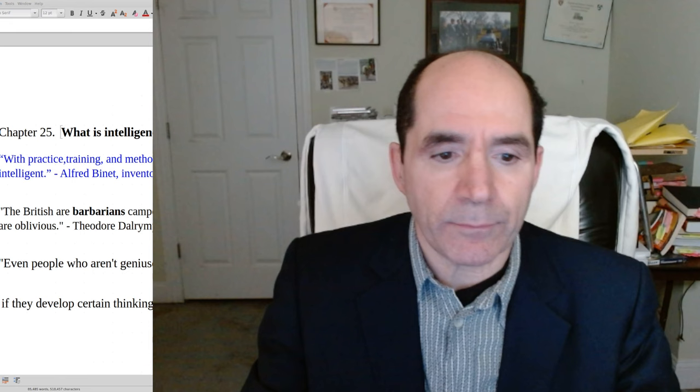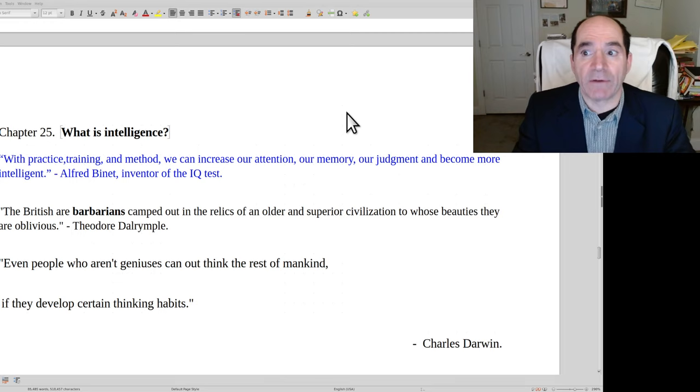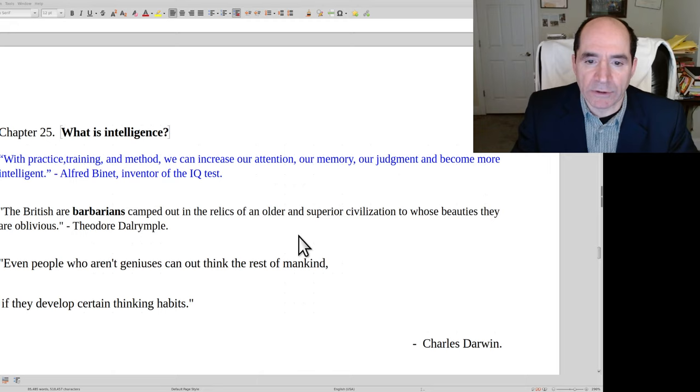I've seen lots of people who didn't seem that smart and ended up really developing themselves intellectually and academically. And I've seen really smart people who just screwed up their lives and their academic ability with all their bad habits. So, a couple quotes. The first one is Alfred Binet, inventor of the IQ test. He said, with practice, training, and method, we can increase our attention, our memory, our judgment, and become more intelligent. Yeah, you can make yourself smarter.